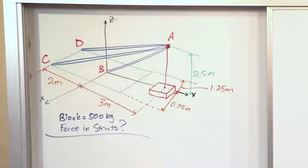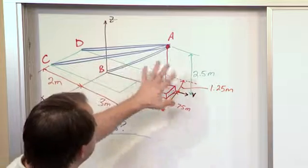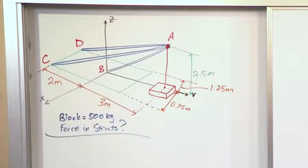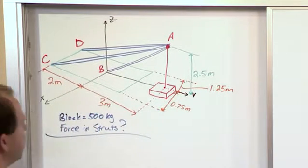Now the only thing that makes this thing a little tricky is the numbers are a little weird so the coordinates are going to be a little weird and it's just going to lead to a little more math but it's fundamentally exactly what we've been doing before.